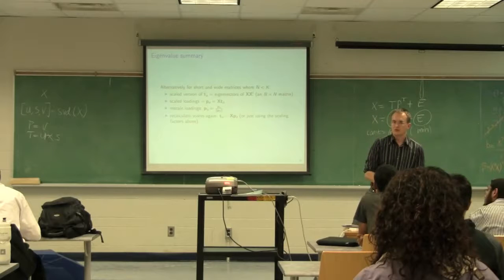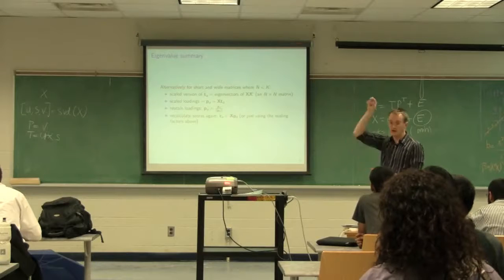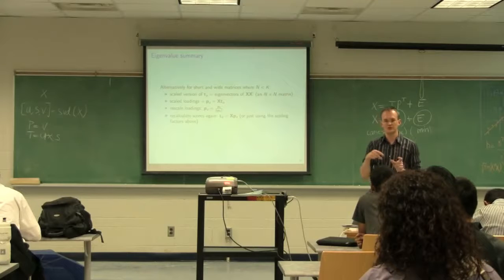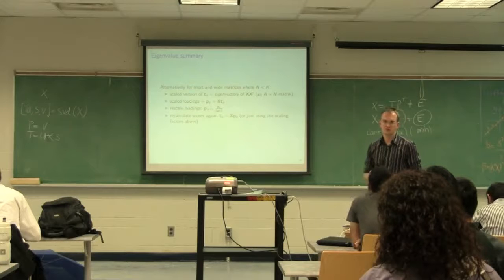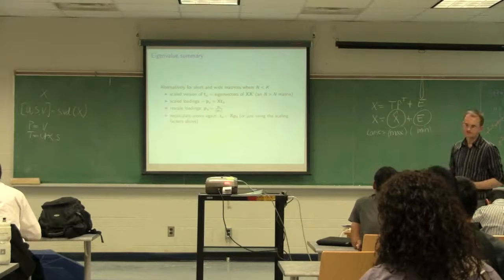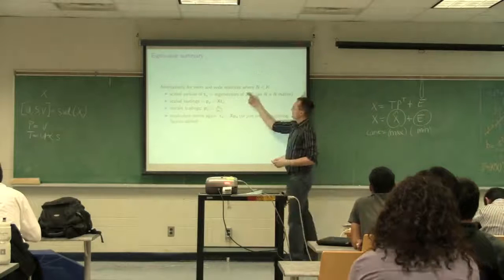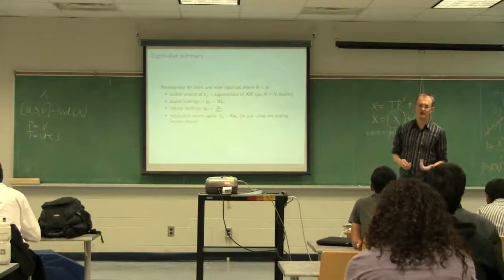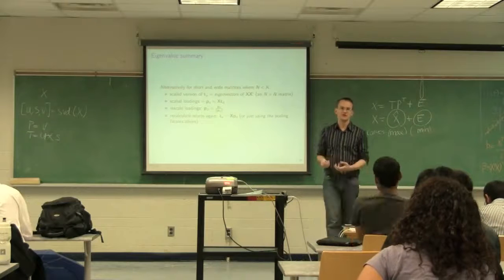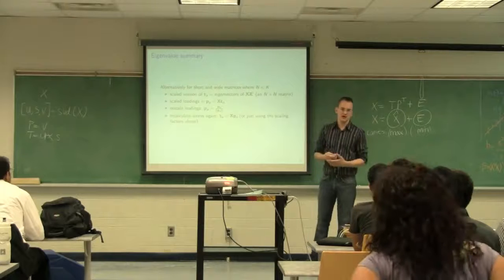The X*X' matrix is still a variance-type matrix — the diagonal entries are still variances and the off-diagonals are covariances of rows with each other. This connects to what are called kernel methods, where we calculate small matrices — n×n or k×k — much smaller than the original data. We do that, for example, when dealing with images or batch processes where it's more efficient to work with these smaller matrices than the original data matrix.